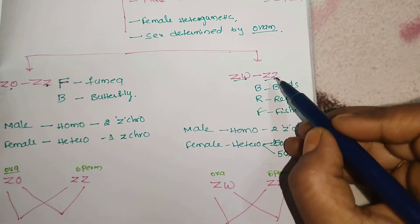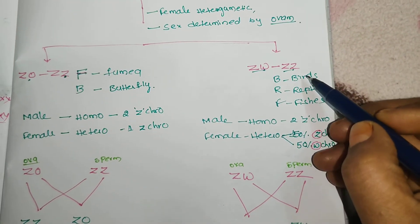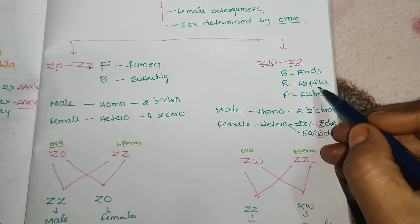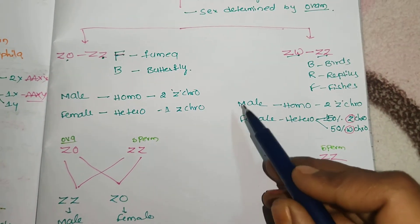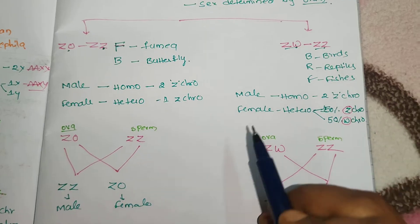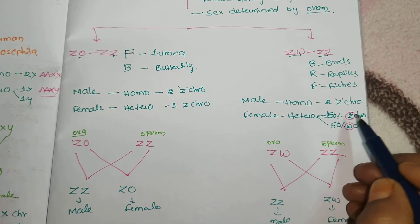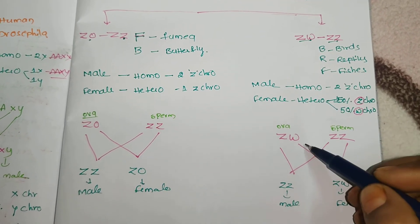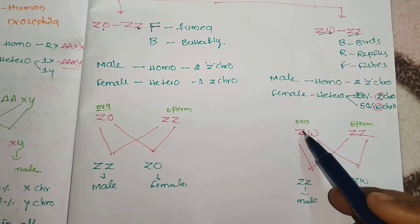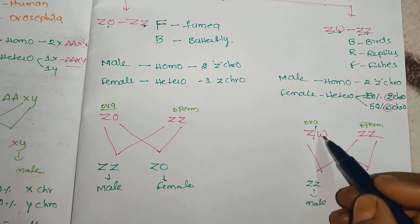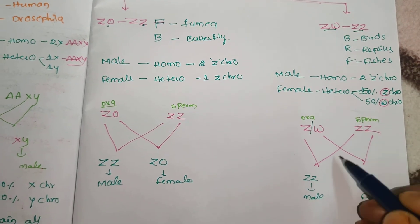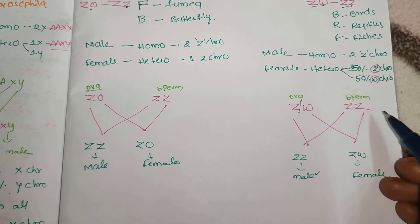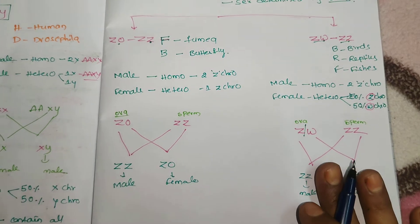Similarly, the ZW/ZZ type is seen in BRF — Birds, Reptiles, and Fishes. Again, the male is homogametic with two Z chromosomes. The female is heterogametic: 50% Z chromosomes and 50% W chromosomes. The sex is decided by the ovum: Z ova paired with Z sperm gives a male (ZZ); W ova paired with Z sperm gives a female (ZW). So the female heterogametic condition decides the sex.